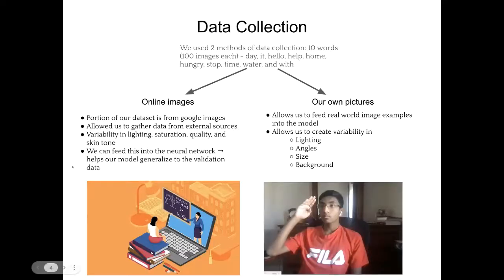For our data collection, we had two methods of data collection. We did look for a dataset online, but we could not find one that had enough images for a large amount of words. So, we decided to create our own dataset of 10 words of our choice, which are listed there, and we wanted 100 images for each word. For online images, a good portion of our data was just looking up the sign on Google, and then downloading an image of someone doing the sign. And this allowed us to gather data from many external sources, which led to variability in lighting, saturation quality, and skin tone.